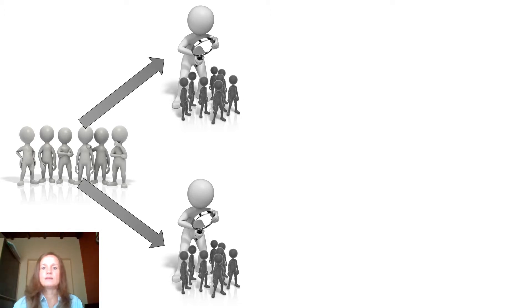Through randomization, we ensure that each group contains a fairly similar distribution of known and unknown factors. For example, if our trial's inclusion criteria specifies that we include participants, male and female, between the ages of 18 and 65, then those are the known factors. However, there may be unknown factors that may influence findings which we are unaware of, or maybe we just haven't thought about, such as an insulin response or oxygen consumption.